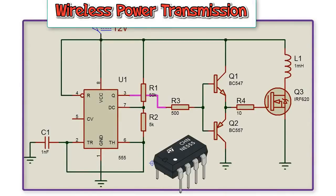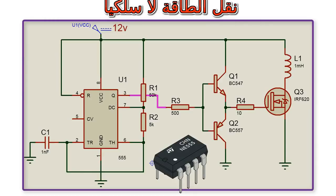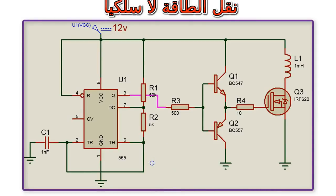The simple wireless power transmission circuit is shown below. The required components of this circuit mainly include a 555 timer, two transistors NPN and PNP type BC547, BC557, and MOSFET transistor IRF620, and 30 gauge magnet wire copper wire.